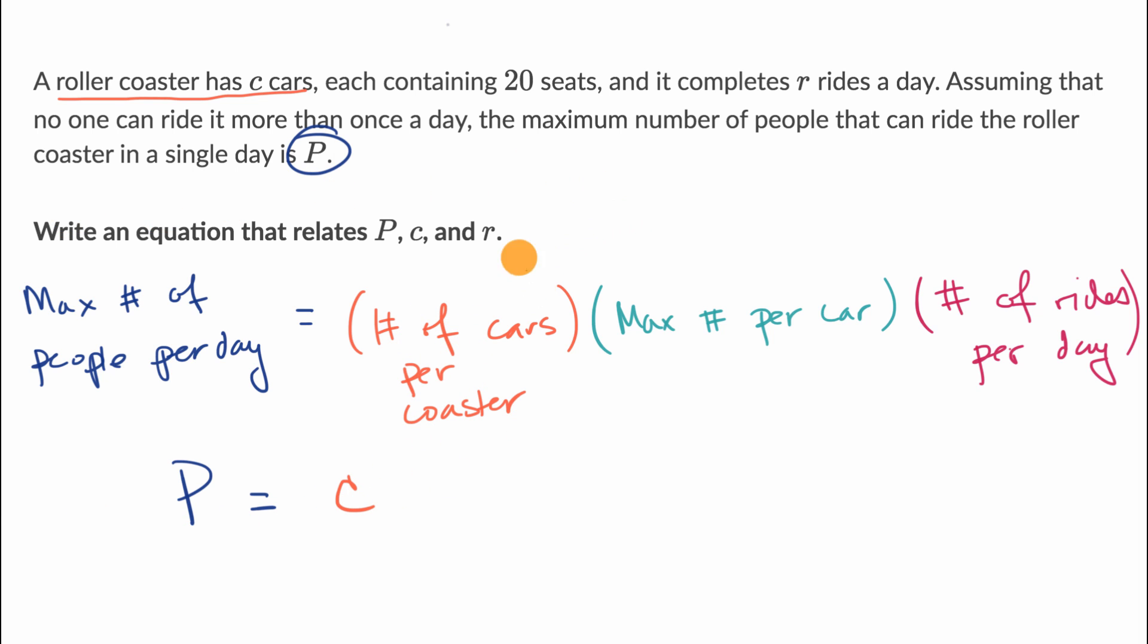Now, what's the maximum number of people per car? Well, they say each containing 20 seats. So I'd multiply that times 20 for this part. And then I want to multiply that times the number of rides per day for the entire roller coaster. So that's going to be times R.